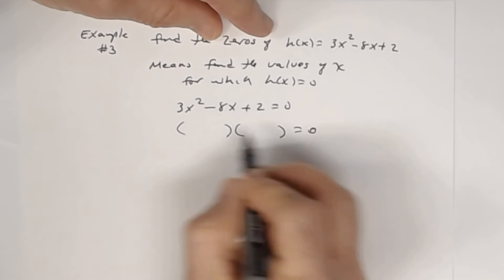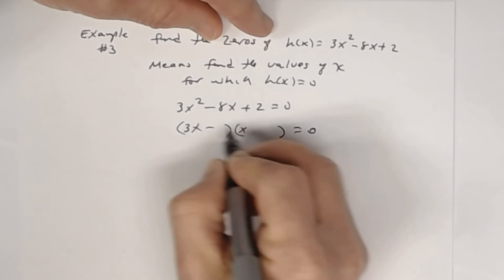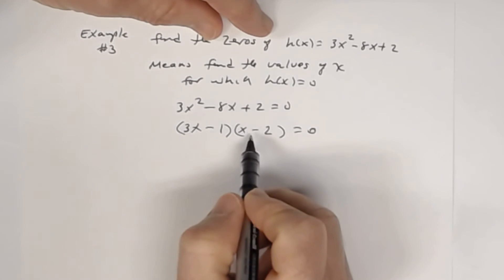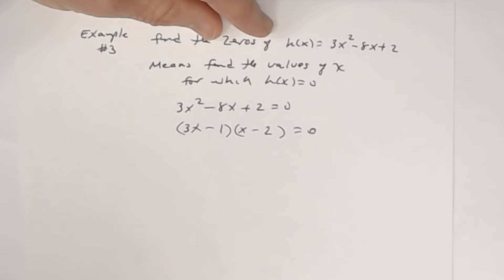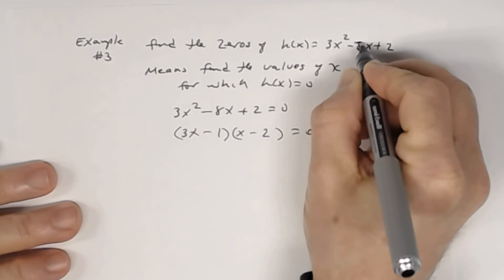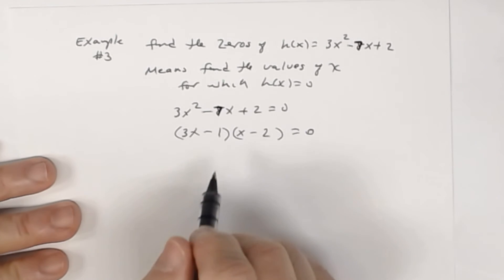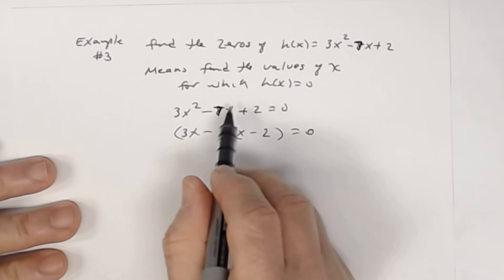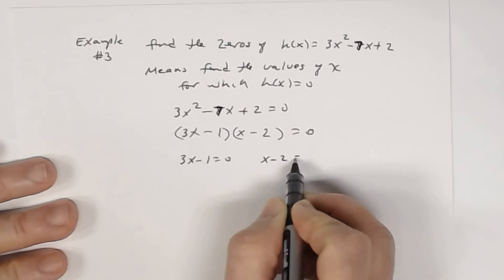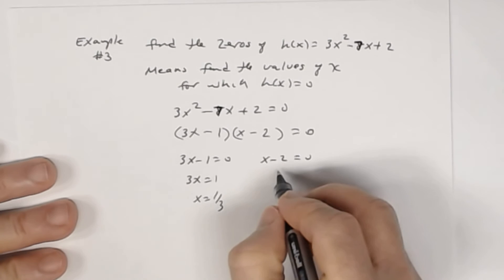Factoring gives 3x minus one times x minus two. The last sign is positive, so both signs are negative because of the middle sign. Setting each factor equal to zero: 3x minus 1 equals 0 gives x equals one third, and x minus 2 equals 0 gives x equals 2.